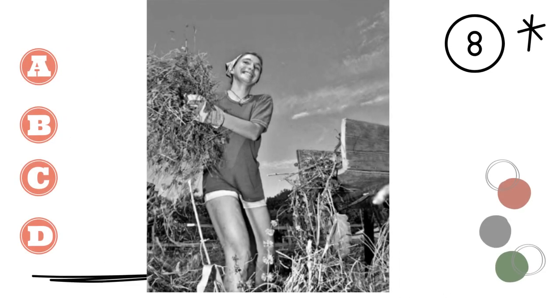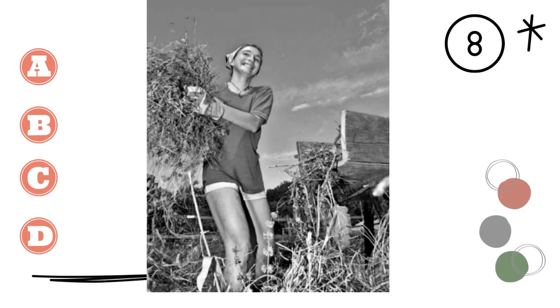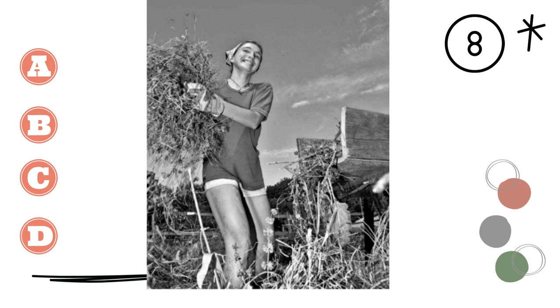8. A. She is working in a courtyard. B. She is working in a pond. C. She is working in a forest. D. She is working in a field.